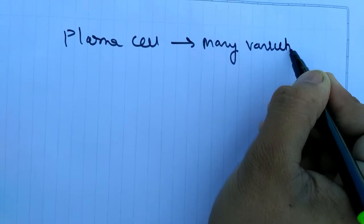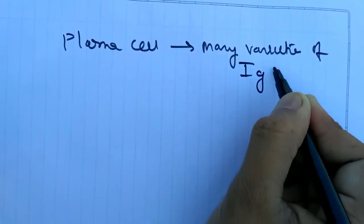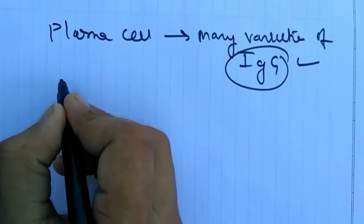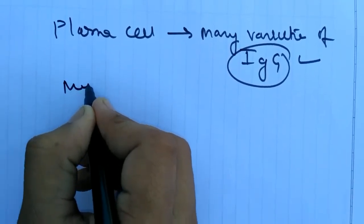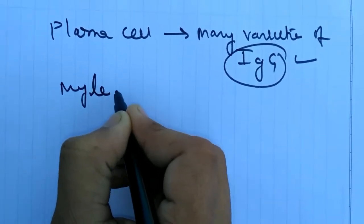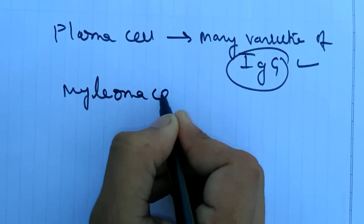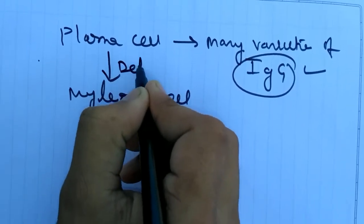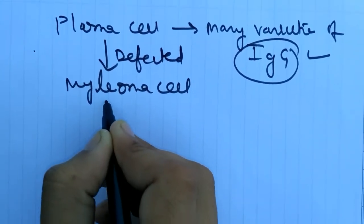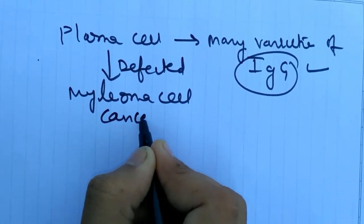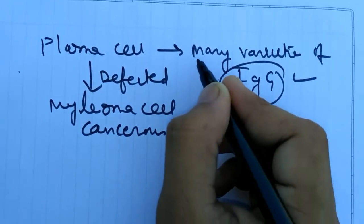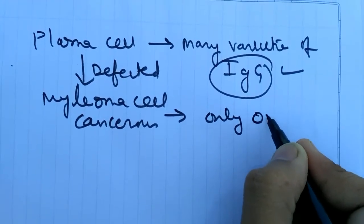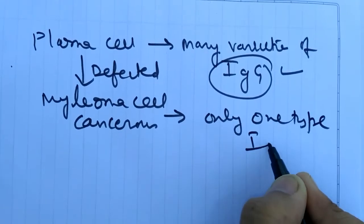But in the abnormal condition, it is a myeloma or myeloma cell. What is myeloma cell? It is defected plasma cell or it is cancerous. It has the different property that it produces only one type IgG.